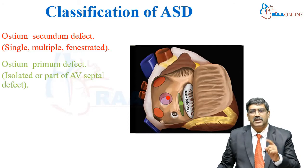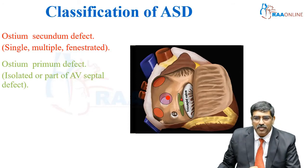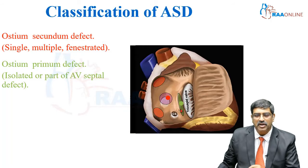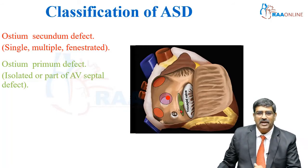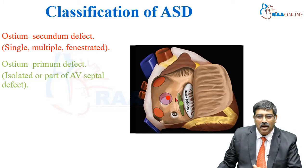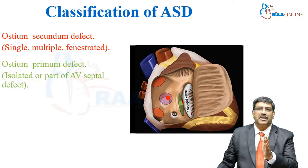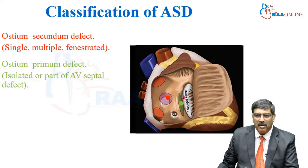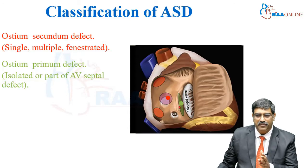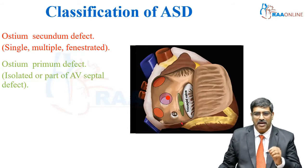The next common type is called the ostium primum ASD. It is a crescent-shaped defect in the lower part of the atrial septum. It is usually isolated or can happen as a part of AV septal defect, where it is called the partial AV canal defect. Here you can see just above the AV valve, that is the tricuspid valve — this is the ostium primum.